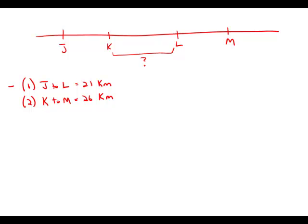Statement number one tells us that the distance from J to L is 21 kilometers. That's all it tells us. If we know that distance, we have no way of figuring out what the distance is from K to L. We need to know the J to K distance also. So this statement by itself is insufficient.